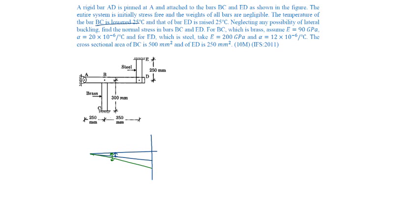Temperature is lowered in BC and in ED it is raised. So BC compresses — say this is the final shape — BC compresses by delta 1 and ED expands by delta 2.